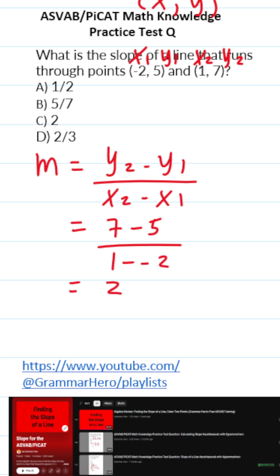7 minus 5 is pretty easy to do. That's 2. 1 minus negative 2. Minus and negative becomes a plus. 1 plus 2 is 3. So the slope is D, 2 thirds.